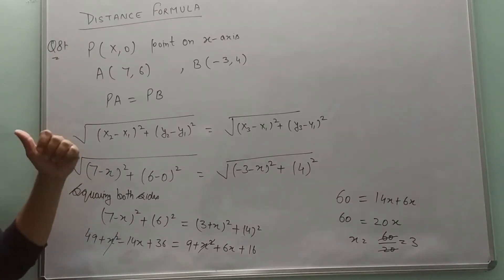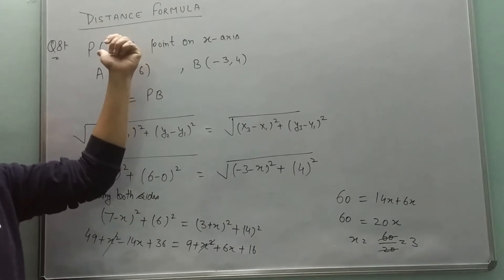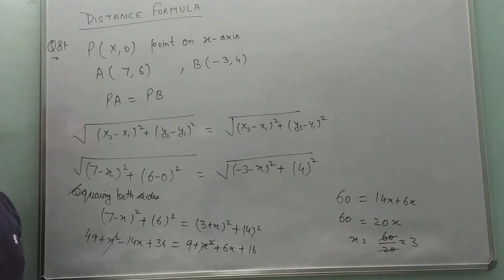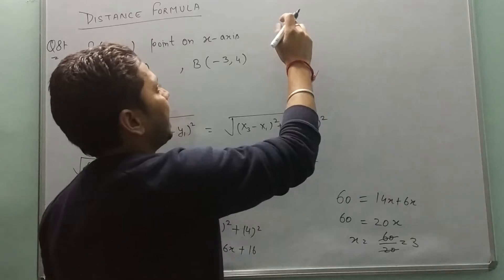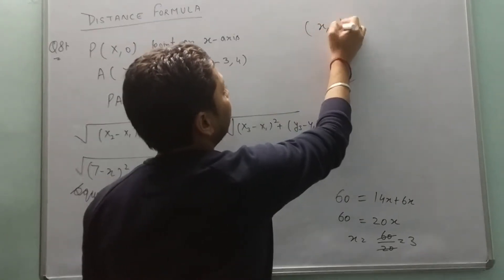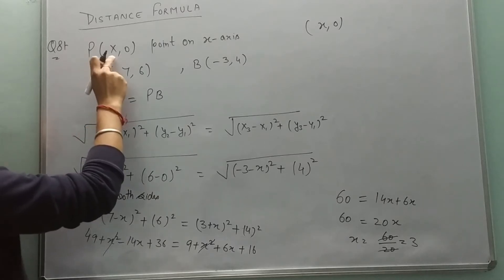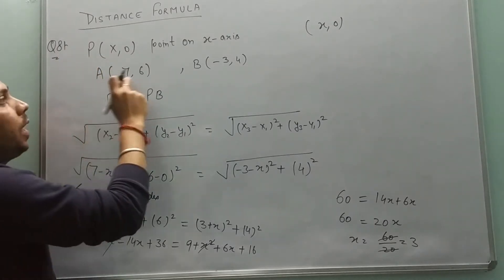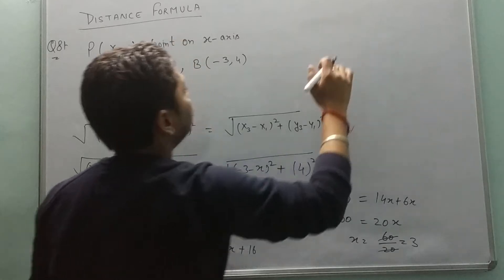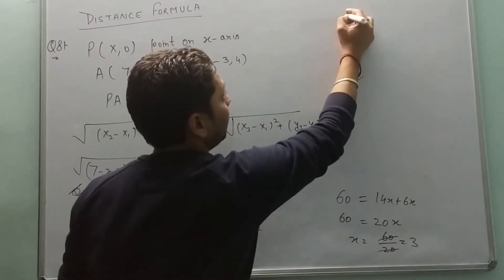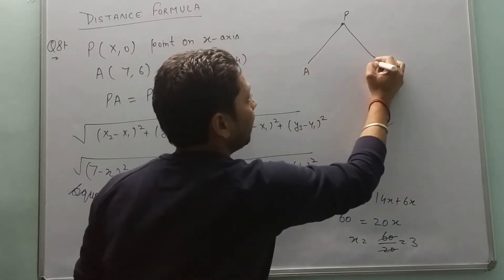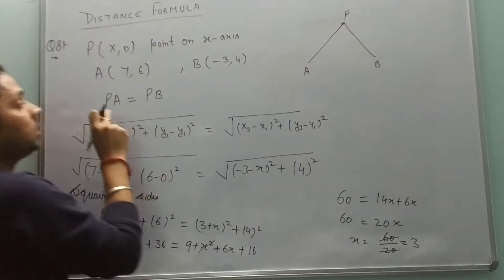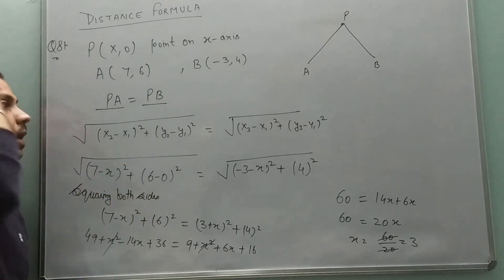Question number 8: find the point on the x-axis which is equidistant from given points A and B. Since the point is on the x-axis, its coordinate is (x, 0) — y is zero on the x-axis. This point P is equidistant from A and B, so the condition is PA equals PB.